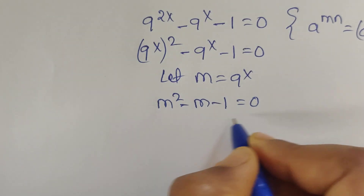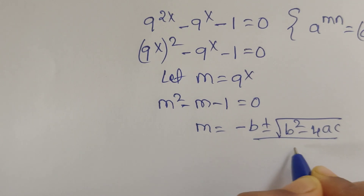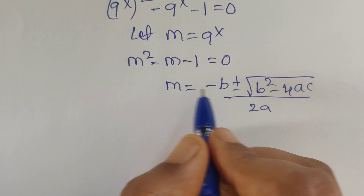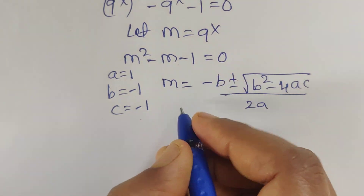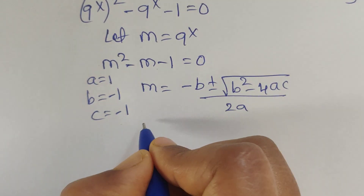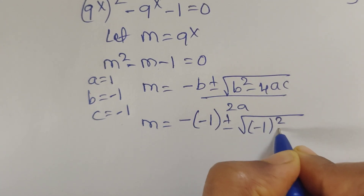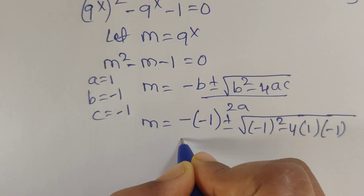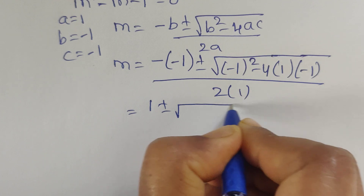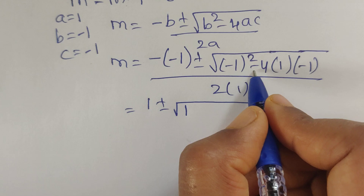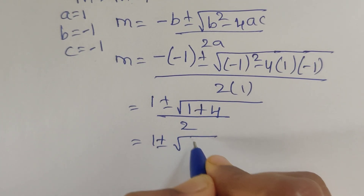Here we can apply the quadratic formula: m equal to minus b plus or minus square root of b squared minus 4ac, divided by 2a. The values are a equal to 1, b equal to minus 1, c equal to minus 1. Substituting: m equal to minus of minus 1, plus or minus square root of minus 1 whole squared minus 4 times 1 times minus 1, divided by 2 times 1. So that gives 1 plus or minus square root of 1 plus 4, which is square root of 5, divided by 2.